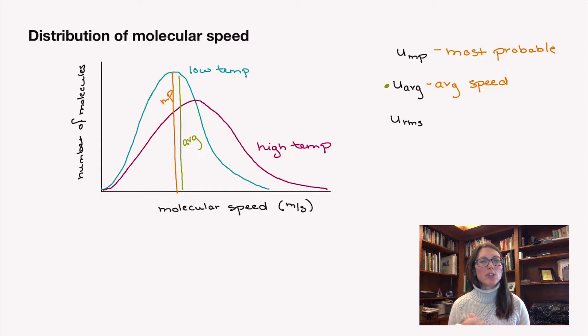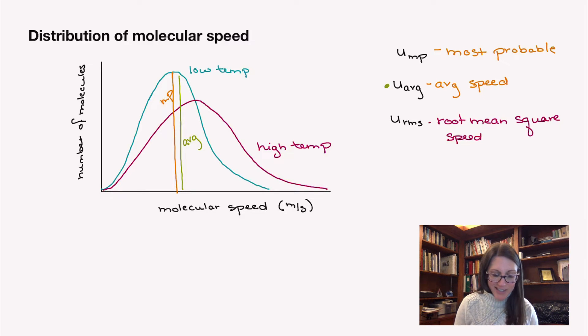And then the last one is U RMS. This is your root mean square speed. This is the speed of a molecule that has the average kinetic energy. And it turns out that this root mean square speed is just a smidge higher than your average speed. In practice, all of these are really close together and very similar in terms of what speed this corresponds to, but there are slight differences.